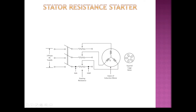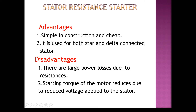Once the motor starts running and attains 80% of the speed, these resistances will be disconnected from the circuit. In the run position, resistances will not be connected to the stator of the induction motor. Direct rated voltage will be applied and the motor will run with rated speed. The advantages of the stator resistance starter are that the construction is simple and cheap, and it can be used for both star and delta connected stator. Disadvantages: there are large power losses due to resistances, and starting torque of the motor will reduce due to reduced voltage applied to the stator.